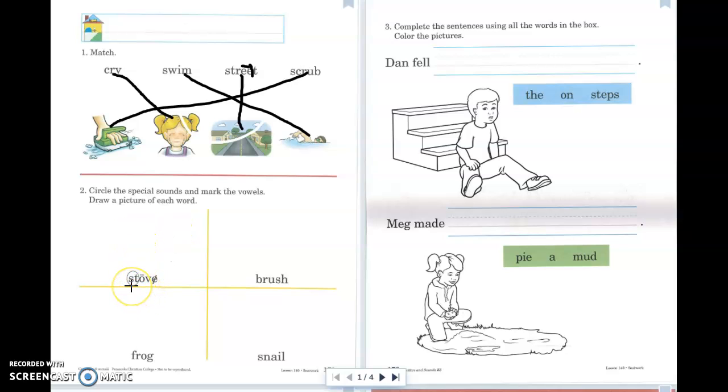So they've done the first one for me. They've circled the S-T, which you don't need to do normally. And S-T says st. Then we have the O that's going to say its name because it has a line over it. And the V and an E that's silent.